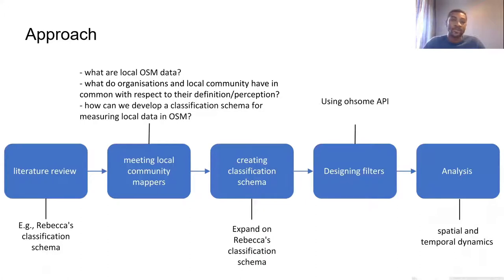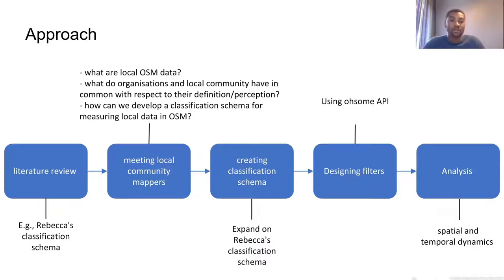In this study, we first started with a literature review. Then we had discussions with local community mapping groups, where we were mainly interested in finding out what is 'local' and what are their perceptions. Together with the local community working groups, we developed a classification schema for measuring local data in OSM. Afterwards we designed the classification schema and filters using the Ohsome API by the HeiGIT group, and then we had case studies to test.